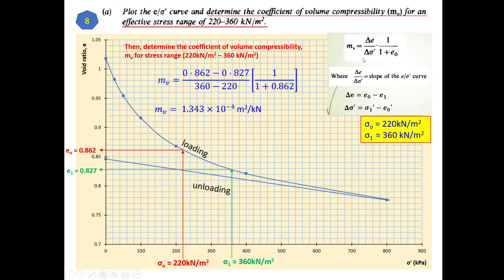Using the equation, delta e equals e₀ minus e₁, which is 0.862 minus 0.827. This is divided by delta stress, which is stress one minus stress zero: 360 minus 220. That result is then multiplied by 1 over (1 + e₀), where e₀ is 0.862. Calculating this gives us the mv value with units of m²/kN.